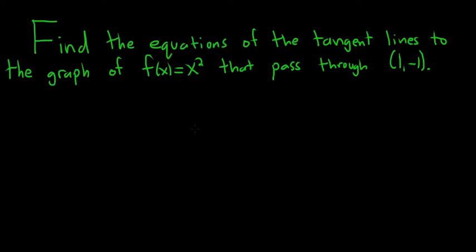Hey, what's up? This problem is a little bit more challenging. So it says, find the equations of the tangent lines to the graph of f of x equals x squared that pass through the point 1, negative 1.